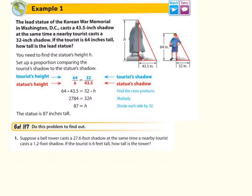So let's get it with the got it problem. Number one, suppose a bell tower casts a 27.6 foot shadow. At the same time, a nearby tourist casts a 1.2 foot shadow. If the tourist is 6 feet tall, how tall is the tower? First off, I would suggest creating the picture or modeling the picture that goes with the problem so you know how to set up the proportion, plus it gives you an excuse to draw and create triangles, which is so much fun.